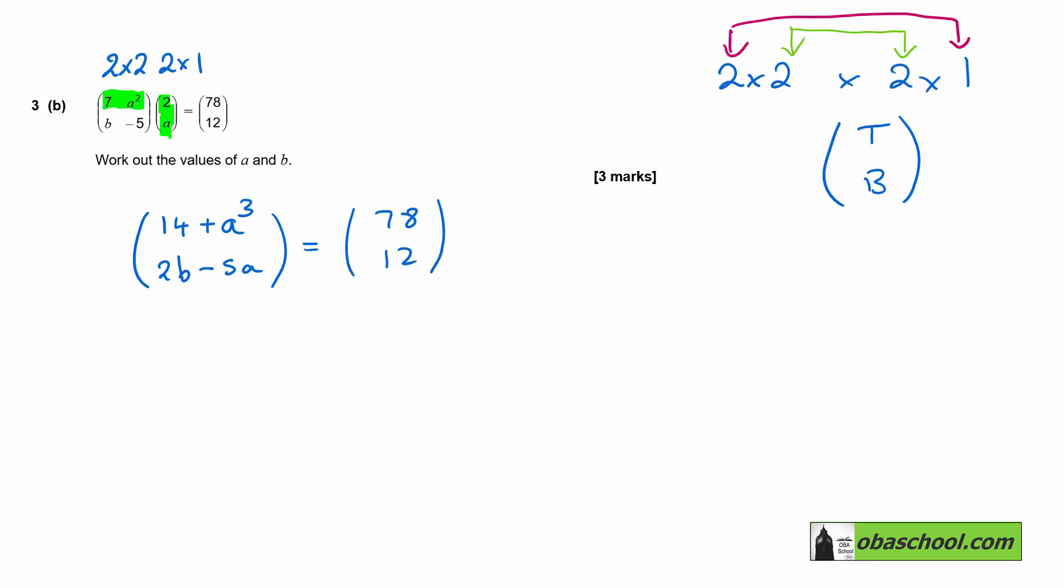And that tells me that 14 plus a cubed is equal to 78, and that 2b minus 5a is equal to 12. So subtract 14 from each side here, and we get a cubed is equal to 64. And that tells me that a is equal to four.